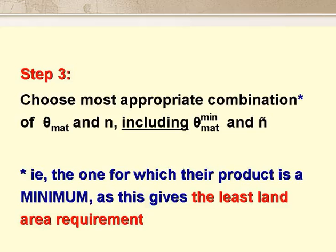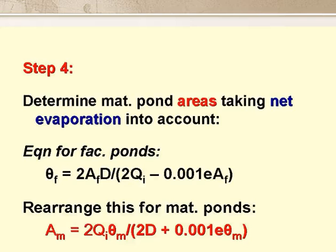Step 3 is the selection of the most appropriate combination of theta mat and N, including theta mat min and N*, where N* is the value of N for which theta mat first goes below theta mat min. Step 4 is the calculation of the maturation pond areas, taking net evaporation into account. With facultative ponds we had the first equation shown on the slide, and for maturation ponds we rearrange this equation in terms of AM, as shown in the second equation on the slide.